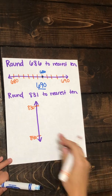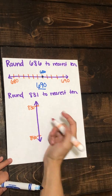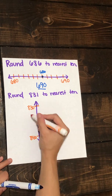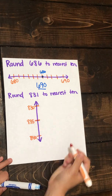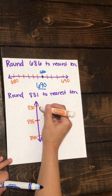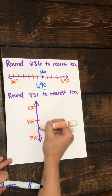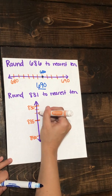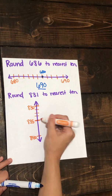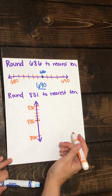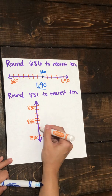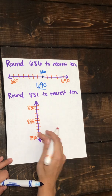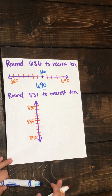We could make a halfway mark — we know that halfway between 830 and 840 is 835. We can also fill in the rest of our numbers: 831, 832, 833, 834, 835, 836, 837, 838, 839, and 840.